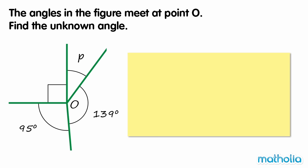The angles in the figure meet at point O. Find the unknown angle. To find angle P, let's find the sum of the known angles, then subtract the sum from 360 degrees.